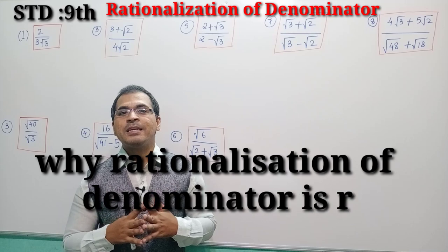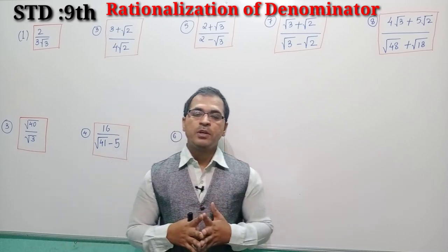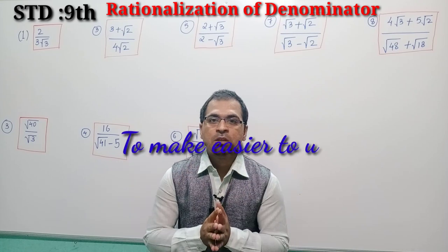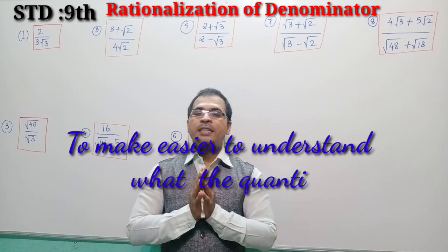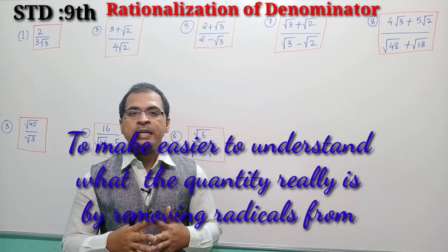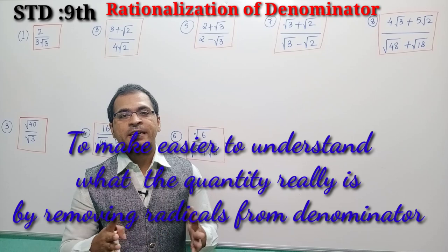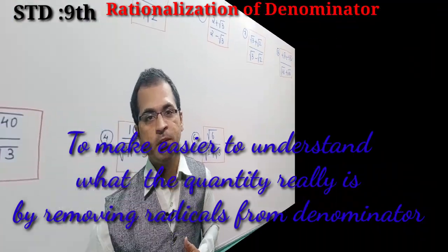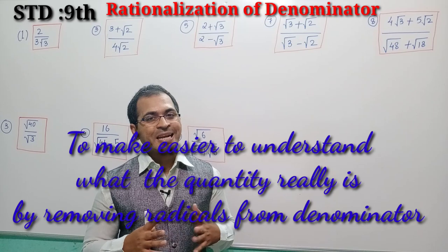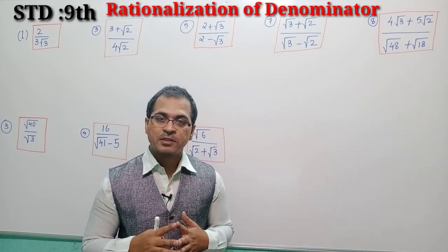Students, whenever there is a fractional term in radical form, we don't know what the real quantity is. So to simplify it and get the real integers, we have to rationalize the radicals of denominators. To rationalize denominators which are in radical form, you will have to keep a few steps in mind.